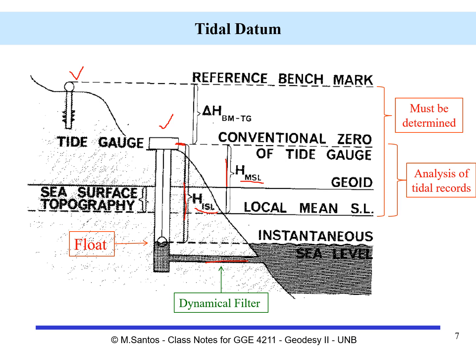Mean sea level is not necessarily the geoid. As we have seen before, the geoid and mean sea level may have a vertical displacement known as the sea surface topography. This means we would have to compute the sea surface topography at the tide gauge site. Having established the zero value, what we do is perform a geodetic leveling to determine the height difference between the benchmark and the tide gauge.